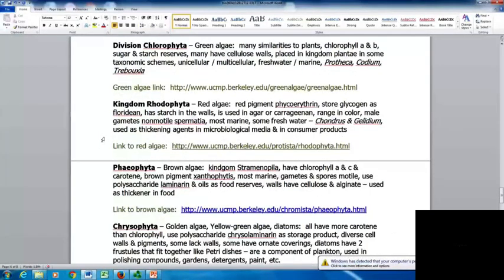The kingdom Rhodophyta are the red algae. They have the red pigment phycoerythrin, store glycogen as floridean starch in the walls. These can be used in agar or carrageenan, sometimes used in the food industry. They range in color. The male gametes have non-motile spermatia. Most are marine, some are freshwater. It includes Chondrus and Gelidium, used as thickening agents in microbiological media. When you're using agar, it uses some red algae to thicken them, and they're used in some other consumer products.